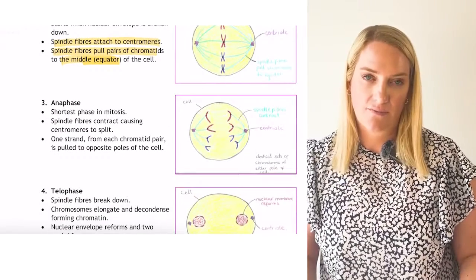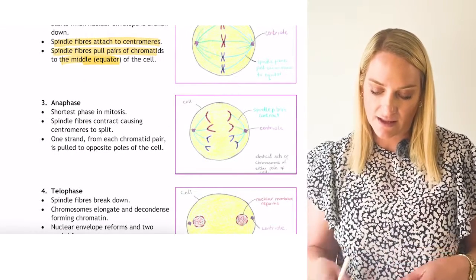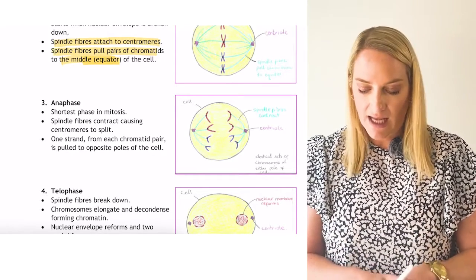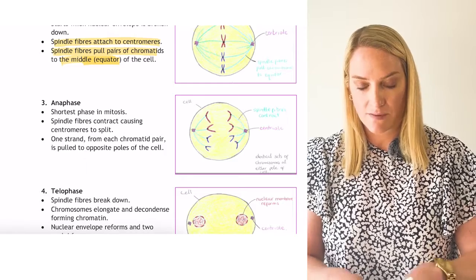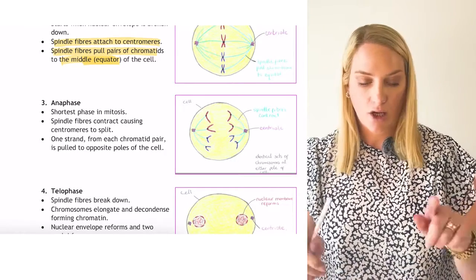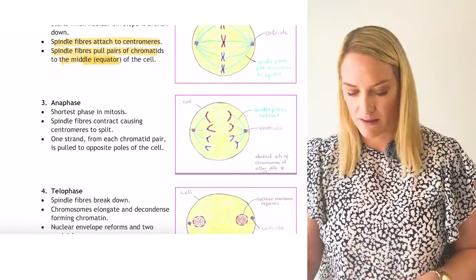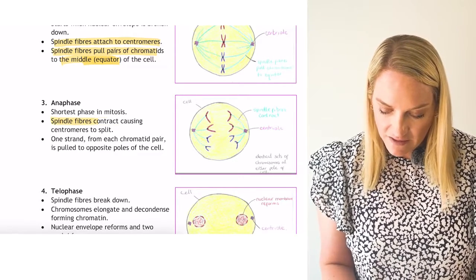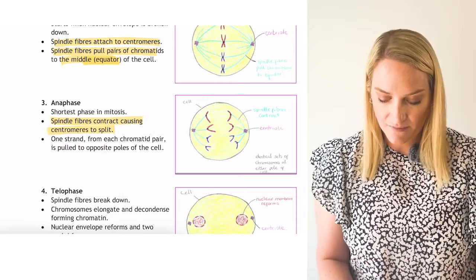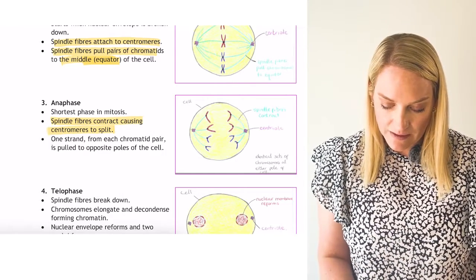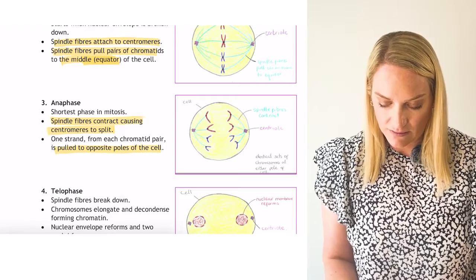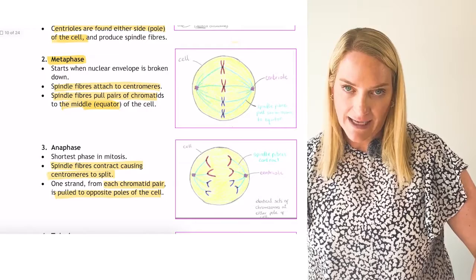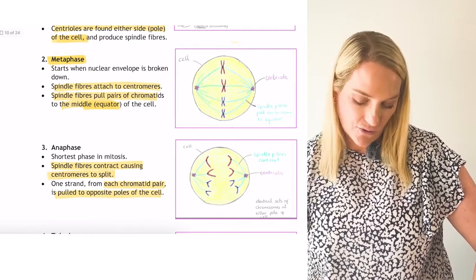In anaphase, the spindle fibers have contracted and become shorter, pulling the centromere apart. Chromosomes are pulled to opposite sides — one chromosome goes to the left, one to the right. This is the shortest phase of mitosis. The spindle fibers contract, causing the centromeres to split, and one strand of each chromatid pair is pulled to opposite poles.